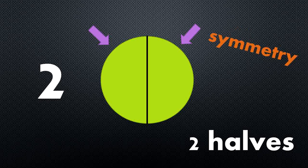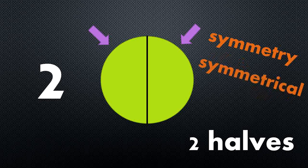If I draw a line down the center of a shape and it makes both sides look the same, that is a line of symmetry. That means that my shape is symmetrical. Symmetry is a word that I'll be using several times throughout this presentation.